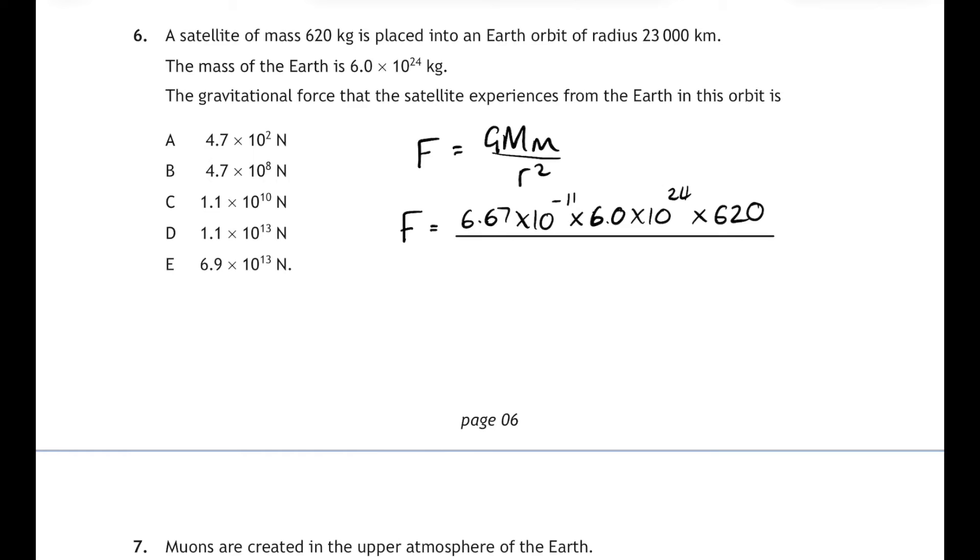But in this case it's okay because we're being told the radius of the orbit is 23,000 kilometers. And the tricky bit here is to remember that that's 23 million meters and don't forget to square that distance. And you do that in your calculator, you'll get an answer of 469 newtons. Very small force - remember gravity is a very weak force. And if you put that into standard form and round it to two sig figs, that's 4.7 times 10 to the 2 newtons. That's 6A.